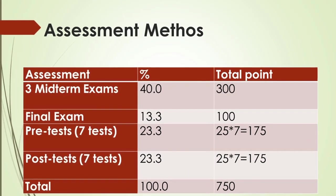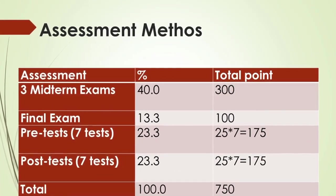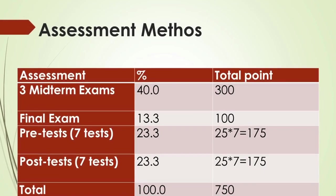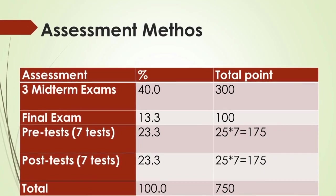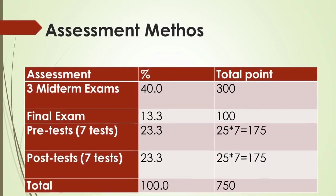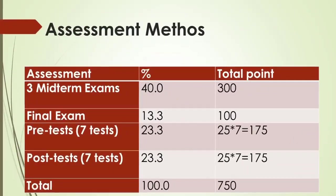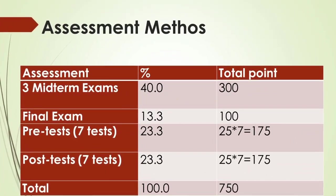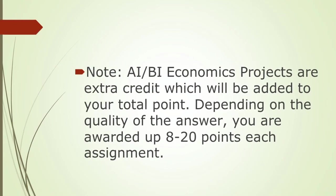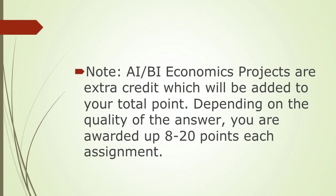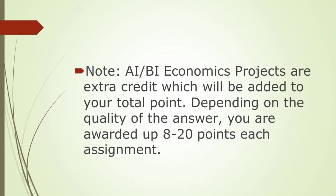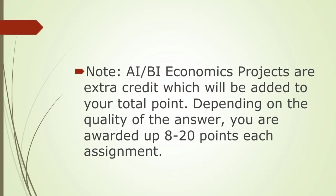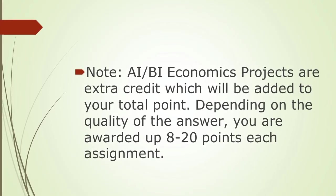Performance Measures and Grading: Letter grades are determined on standard percentage distributions. Total points equal 750, representing 100%. Note: AI/economics projects are extra credit, which will be added to your total points. Depending on the quality of the answer, you are awarded up to 8 to 20 points per assignment. The grading scale is indicated below.